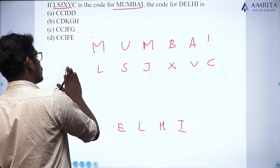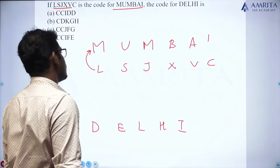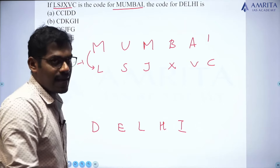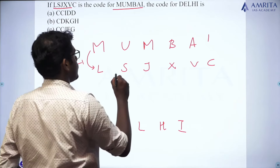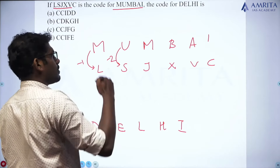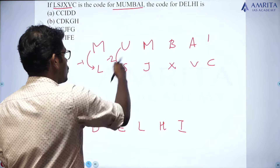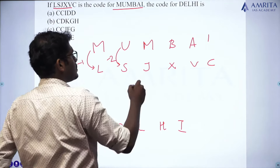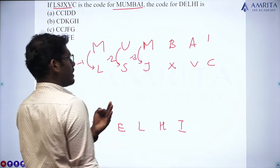M minus 1 is L — the preceding letter of M is L (J, K, L, M). U minus 2 is S because S, T, U — so U minus 2 is S, and U minus 1 is T. So M is coded as M minus 3, which gives J (J, K, L, M). We can say M minus 3 is J.